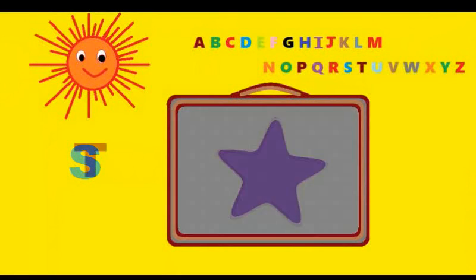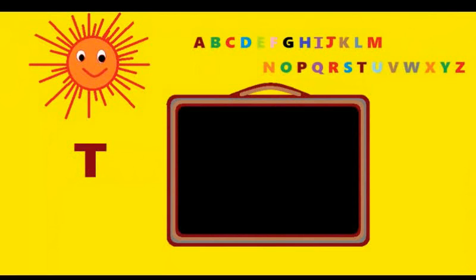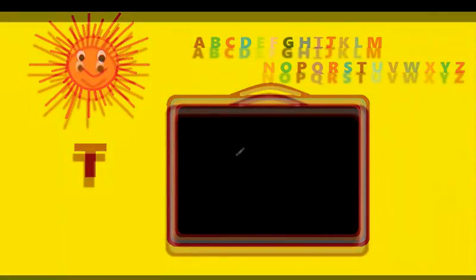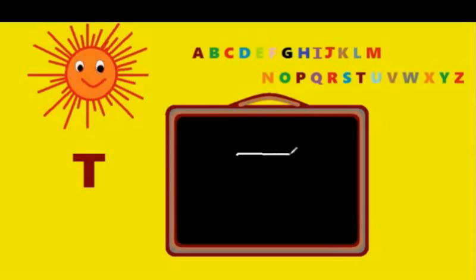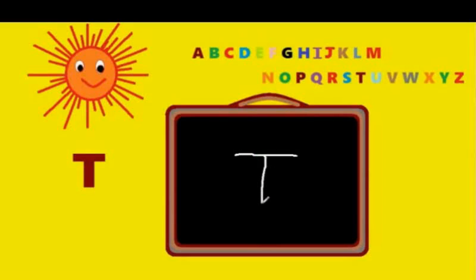T. Make a sleeping line and make a standing line. That's T. Across the street and down the street. That's T. T is for tree.